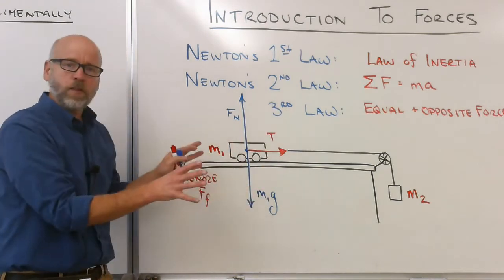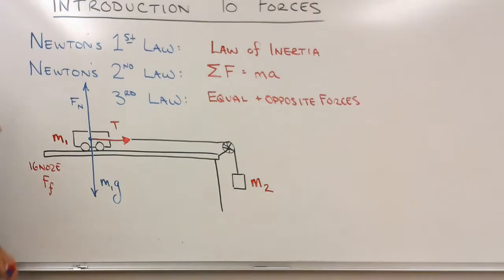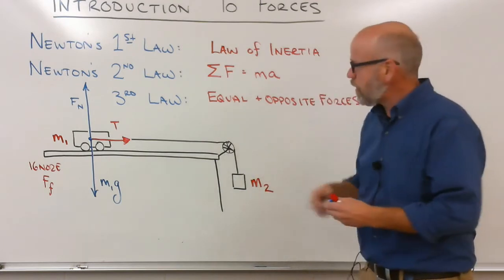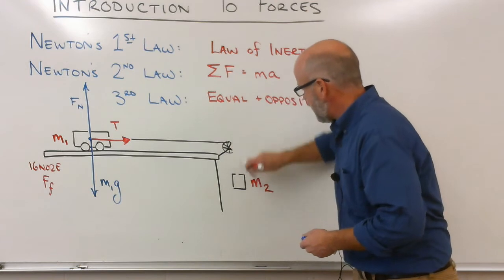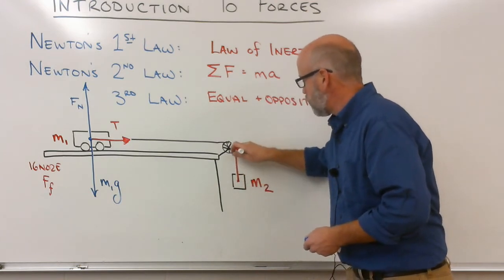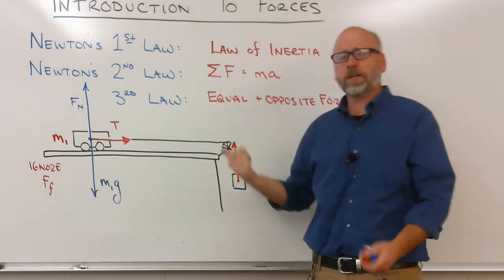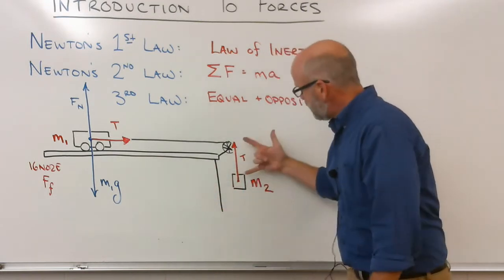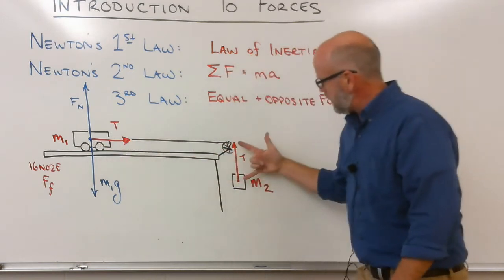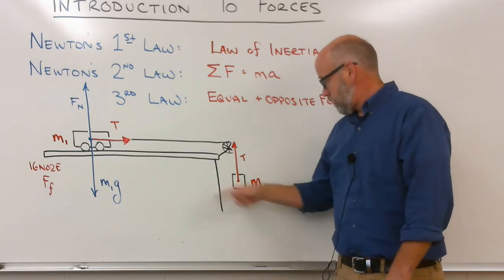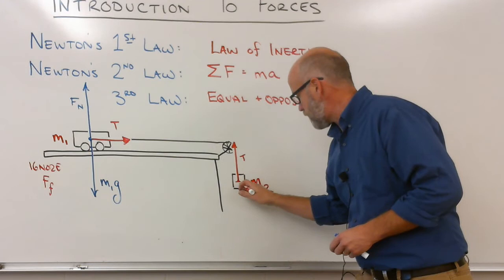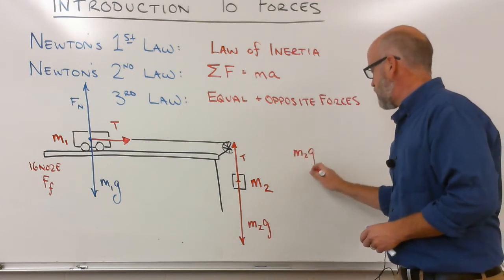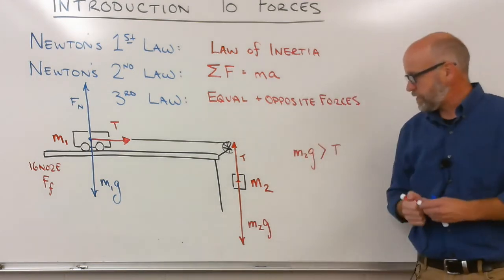Are there any other forces acting on M1? Nope, I don't think so either. Let's look at the other mass, M2. What's holding it back? That's right — the tension in the string. And that tension is actually the same throughout the string. Picture a guitar string: if you pluck it at one end or the other, the tension is still the same throughout. These tensions should be drawn equal and in opposite directions. The only other force acting on M2 is M2g, and M2g should be greater than the tension, so I should draw it longer.